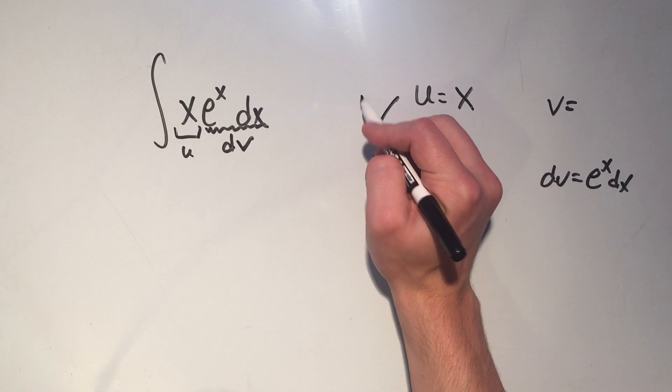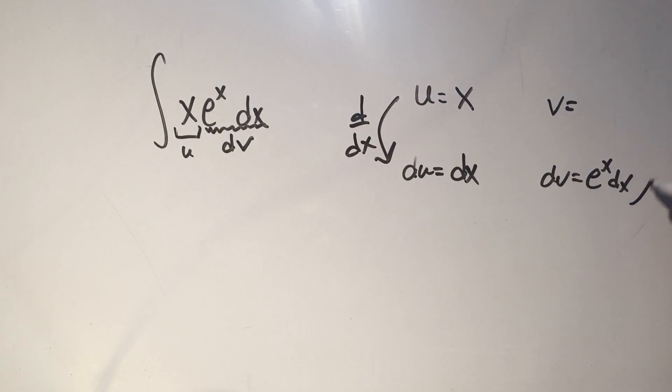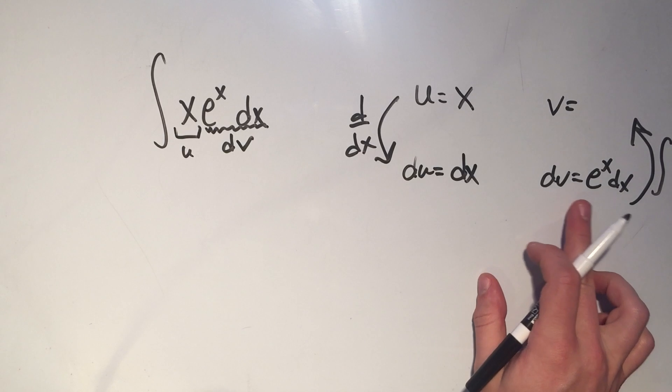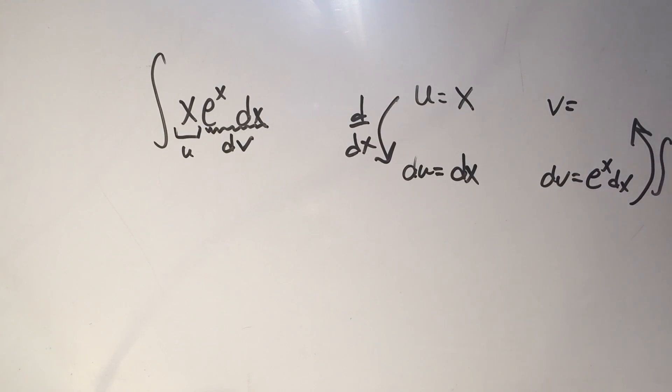Remember, I take the derivative this way and I take the anti-derivative that way. And the anti-derivative of e to the x dx is simply e to the x.